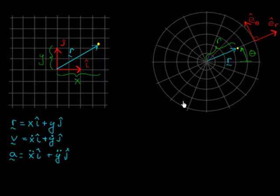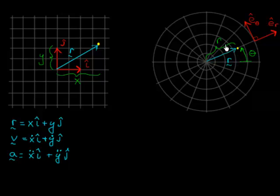Recall in polar coordinates we have an alternate way of specifying the location of a point. Whereas in Cartesian it's really simple — you just do x and y, horizontal and vertical — in polar coordinates you specify how far the point is from the origin, calling that scalar r, and you also measure the angle of the line from the origin to that point in terms of theta. So we've got two parameters, r and theta, which replace the x and y in Cartesian coordinates.